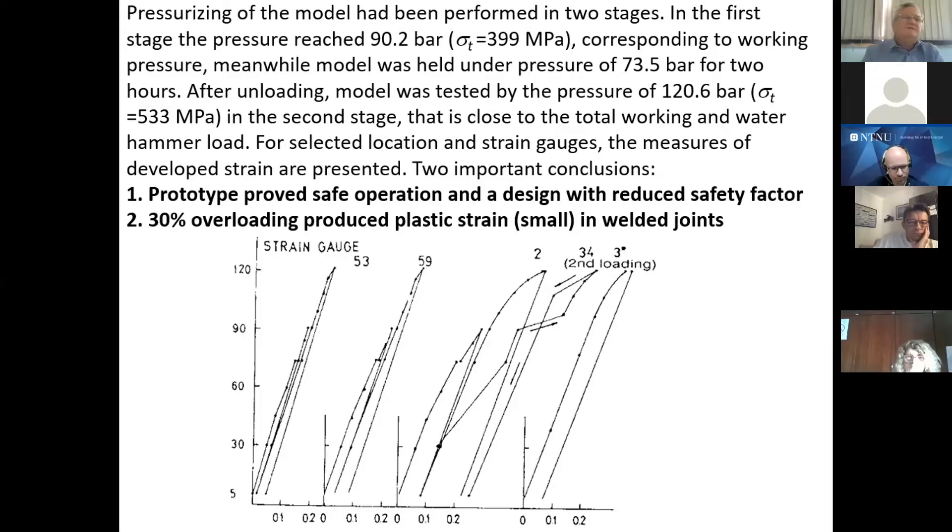The other one also important, that 30% of overloading produced small plastic strain, as I just explained. From one point of view, this means that 30% of overloading is too much. Maybe overloading is a bad idea. But other aspect of this problem is that steel, which was used to build this pipeline, is ductile enough. It has a reserve of plasticity, which can sustain this small strain without any damage.